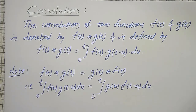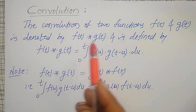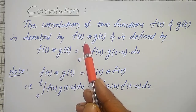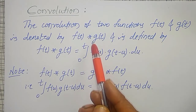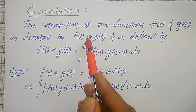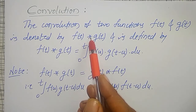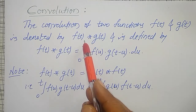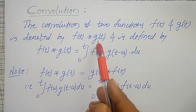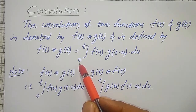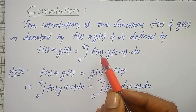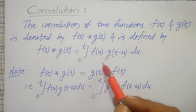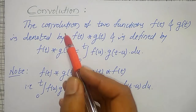Now, what does convolution mean first? The convolution of two functions f of t and g of t is denoted by f of t asterisk g of t. It is nothing but one of the operators — similar to an operator — and we are calling it as convolution. f of t convolution g of t is defined to be the integration from 0 to t of f of u into g of t minus u, du. This integration of two functions is known as convolution.